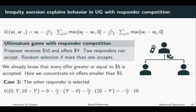The third case is where the other responder is selected. In this case, responder I receives zero, the other responder receives Y, and the proposer receives 10 minus Y. Responder I is worse off than both the other responder and the proposer. The utility of responder I is given by minus alpha I over 2 times 10, and notably this utility is independent of how the $10 are divided between the proposer and the other responder.